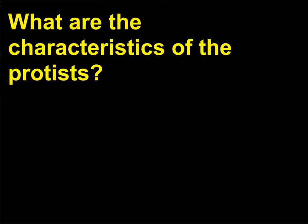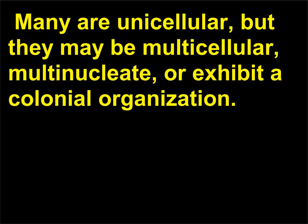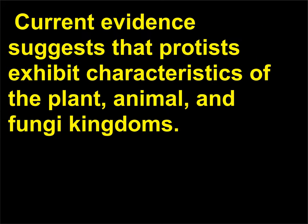What are the characteristics of protists? Protists are a diverse group of organisms. All protists are eukaryotic. Many are unicellular, but they may be multicellular, multinucleate, or exhibit a colonial organization. Although most are microscopic, some are much larger, reaching lengths of nearly 200 feet (60 meters). In early traditional taxonomic schemes, they were united on the basis of being neither plant nor animal nor fungus. Current evidence suggests that protists exhibit characteristics of the plant, animal, and fungi kingdoms.